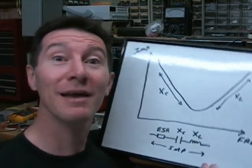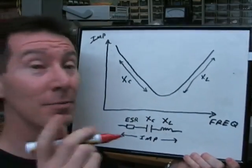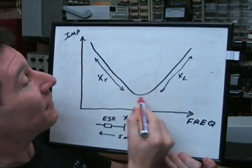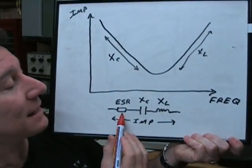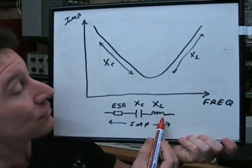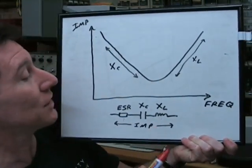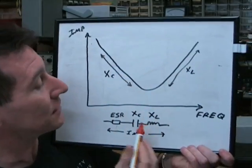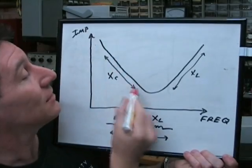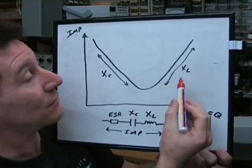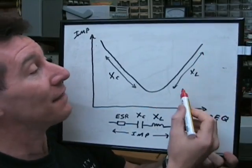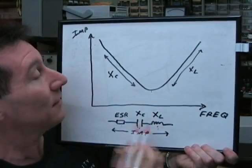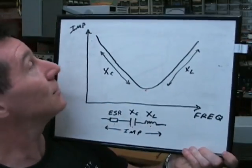An important characteristic of capacitors that a lot of people don't understand is the impedance versus frequency characteristic. The model of a capacitor is the ESR in series with the capacitive reactance, which changes with frequency, and the inductive reactance, which also changes with frequency. At low frequencies, the capacitive reactance dominates. At higher frequencies, the inductive reactance takes over and dominates the total impedance. There's a resonant point where these two are equal, and that's the best place to operate the capacitor in terms of impedance.